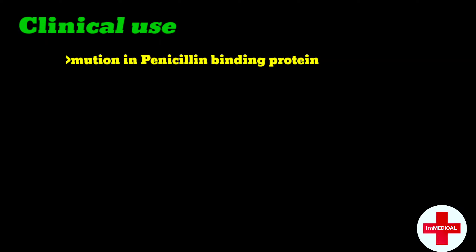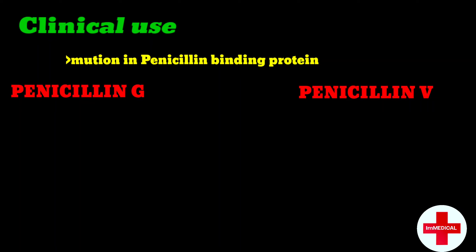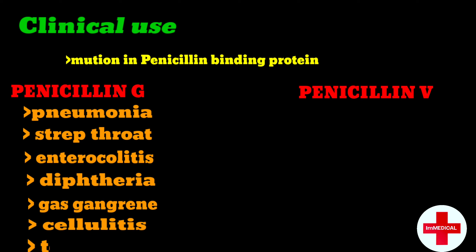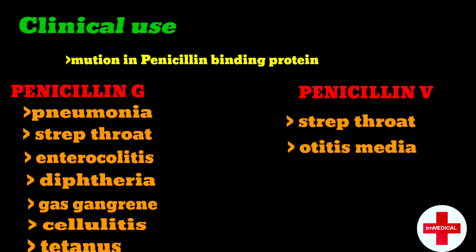Which infections use these drugs, Penicillin-V and Penicillin-G? Penicillin-G is mostly used in pneumonia, strep throat, syphilis, enterocolitis, diphtheria, gas gangrene, cellulitis, and tetanus. Penicillin-V is used in strep throat, otitis media, and cellulitis. Both Penicillin-V and Penicillin-G have the same side effects or adverse effects. Thanks for watching.